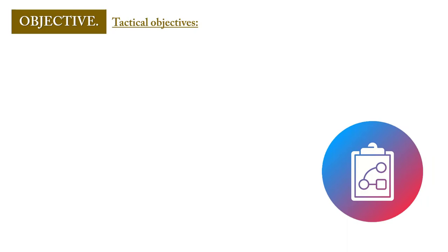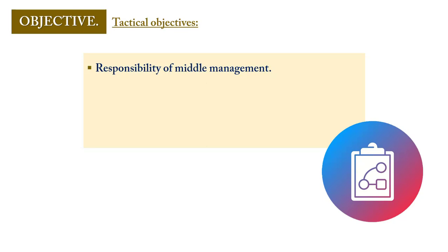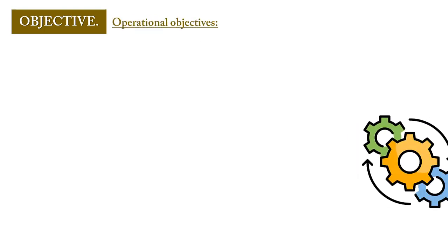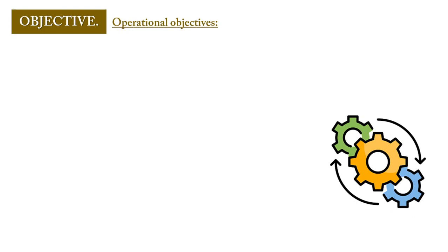Tactical objectives are normally set by middle-level managers — line managers, directors, the general manager, the human resource director, the finance director, and the likes. Tactical objectives bring strategic objectives a step lower; the strategic level is broad and doesn't make sense for the ordinary person, so it is broken down into a tactical level. Tactical objectives span a medium-term period — above one year.